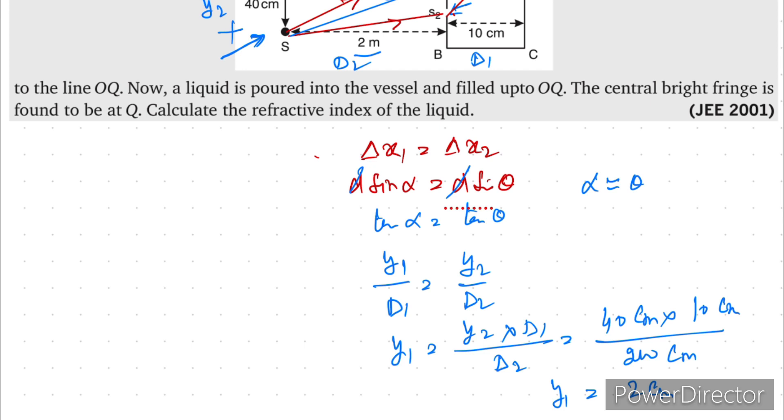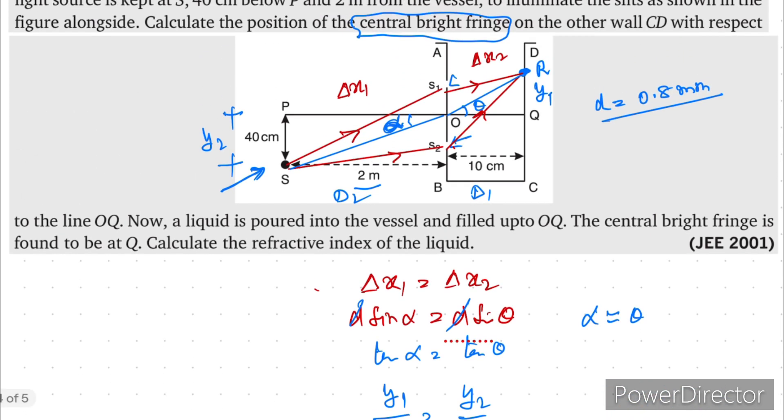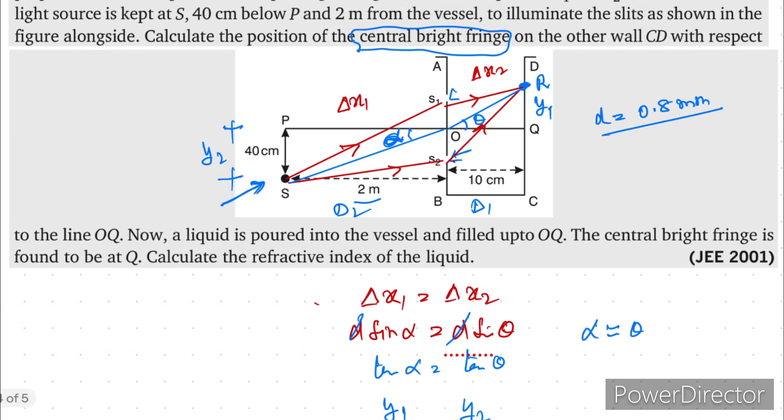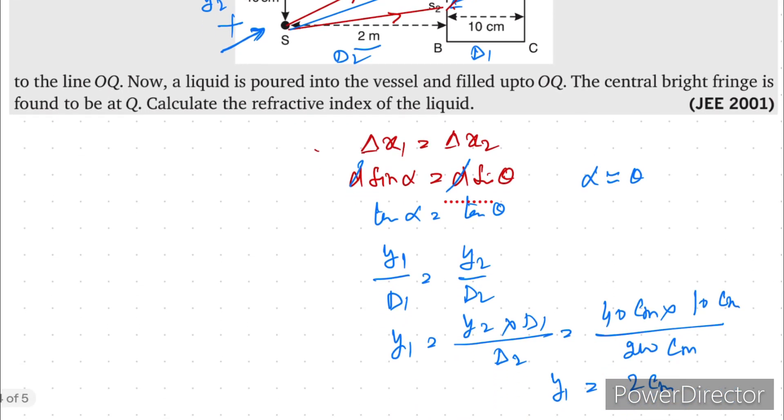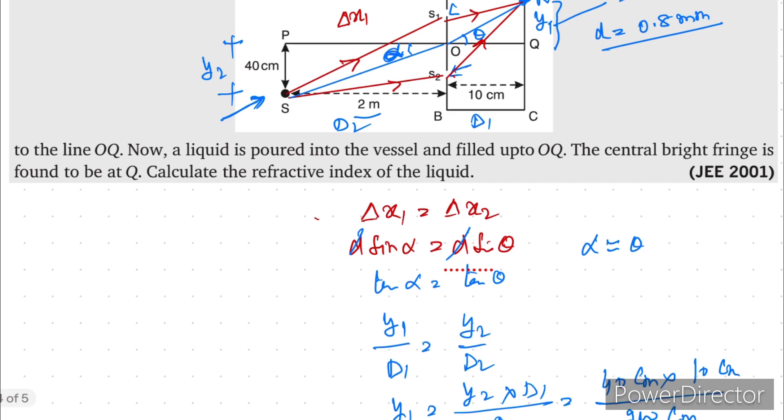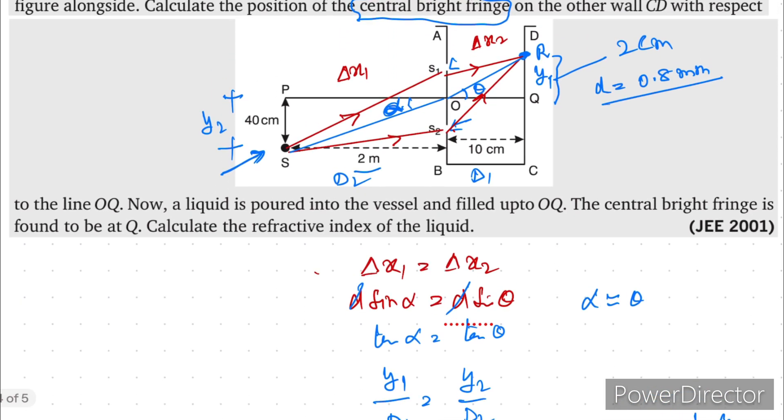So at a distance from Q, at a distance from Q, you will have the bright fringe. So see this is the answer of the part A or you can say part 1.